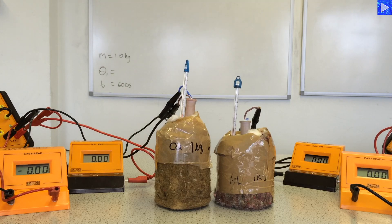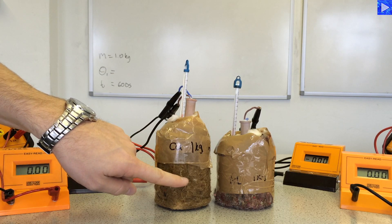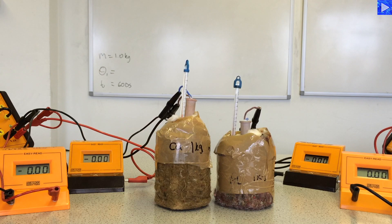This is the experiment to determine the specific heat capacity for metal. I have two metal blocks, a copper block on the left and an aluminum block on the right. They both have a mass of one kilogram.